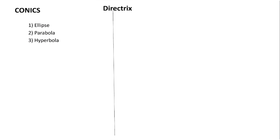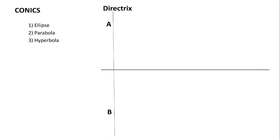The directrix is nothing but a straight vertical line, which I am naming as line AB. Through any random point on it, I am going to draw a line perpendicular to the directrix — that line is the axis line. This directrix is perpendicular to the axis line, and this axis line is nothing but the major axis for the ellipse curve.